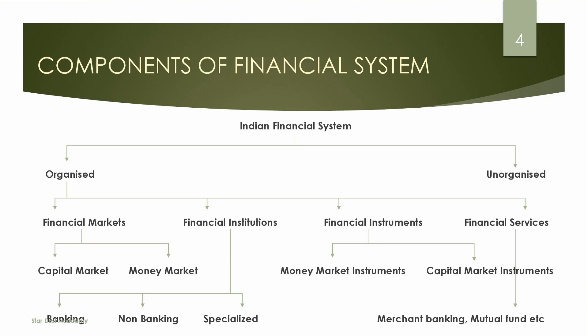In the Indian financial system, there are two parts: Organized financial system and Unorganized financial system. The unorganized financial system includes money lenders or small funds. In the organized financial system, there are four parts: one — Financial Markets; two — Financial Institutions; three — Financial Instruments; four — Financial Services.